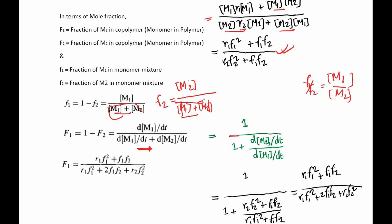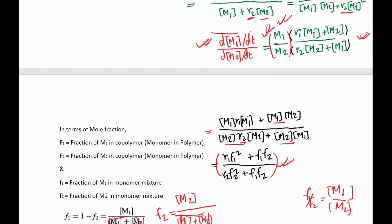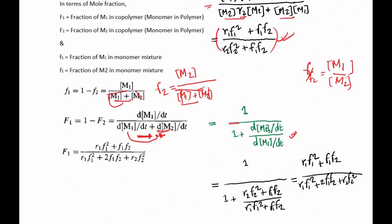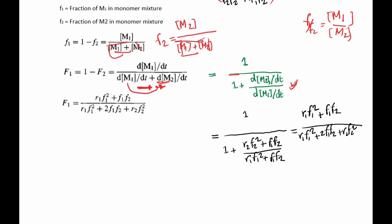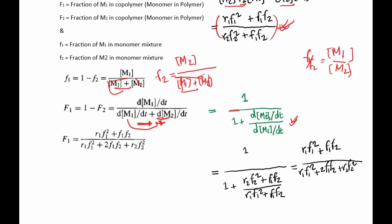Substituting our expression — noting that M1/M2 appears here and M2/M1 appears in the denominator term, so the ratio gets flipped — r2·f2² + f1·f2 goes to the numerator. Combining, we end up with the final expression where the denominator is r1·f1² + 2·f1·f2 + r2·f2². That concludes today's video. I hope you have understood the derivation. I will see you next time — take care.